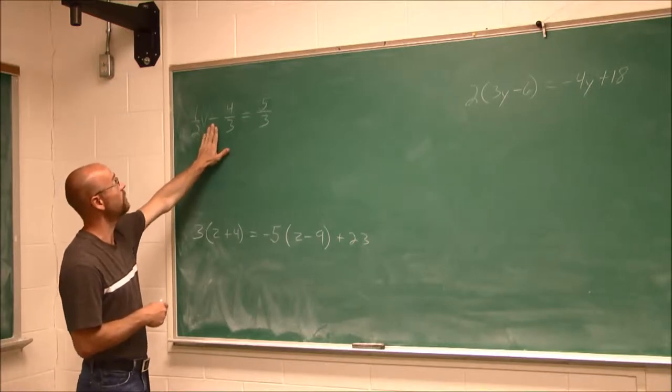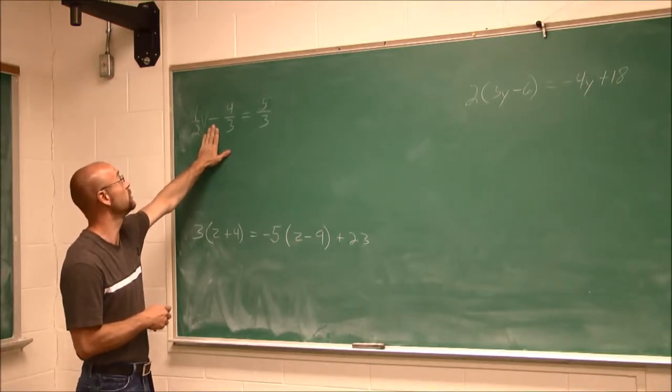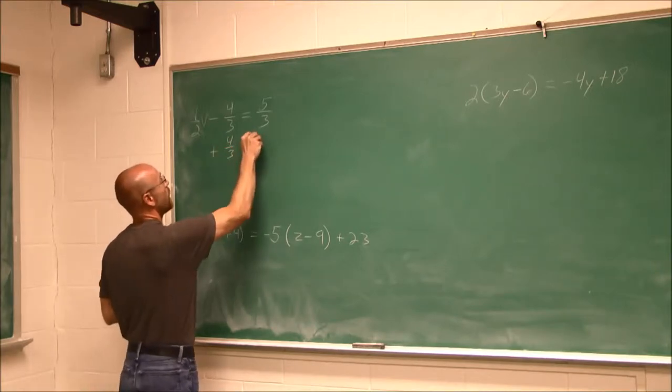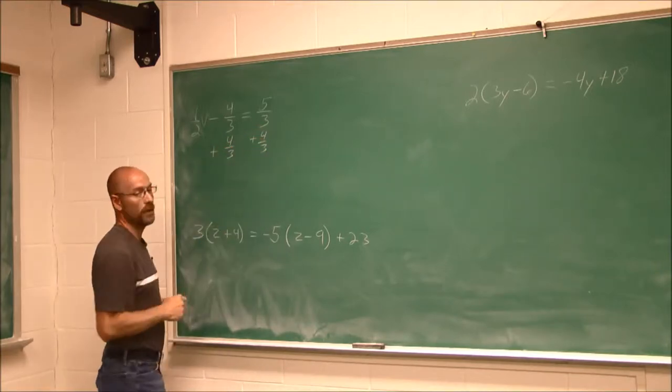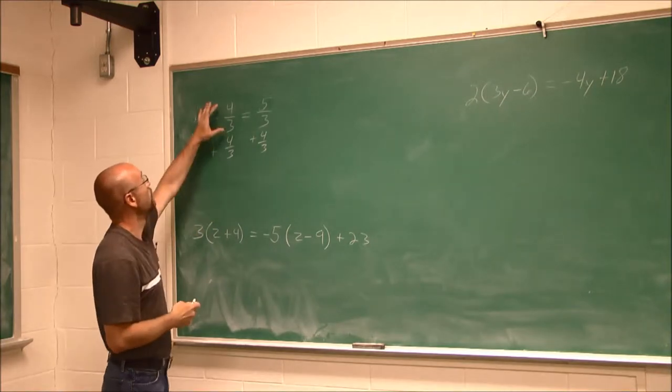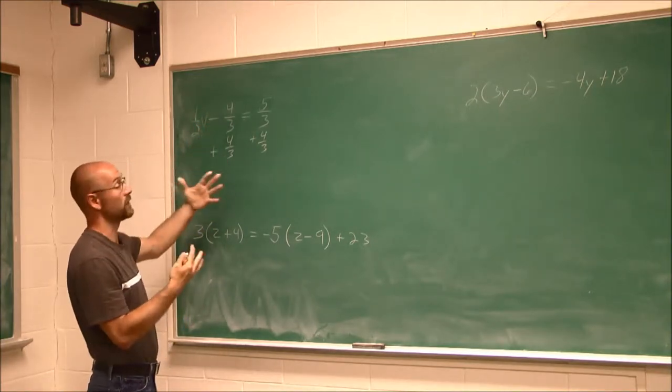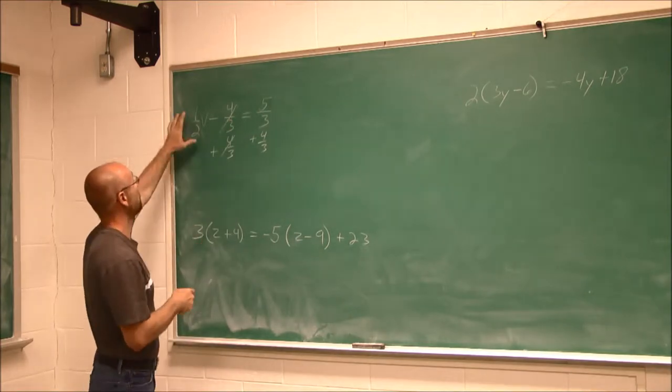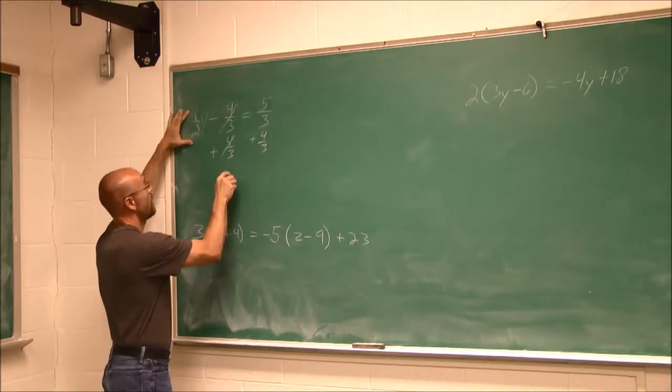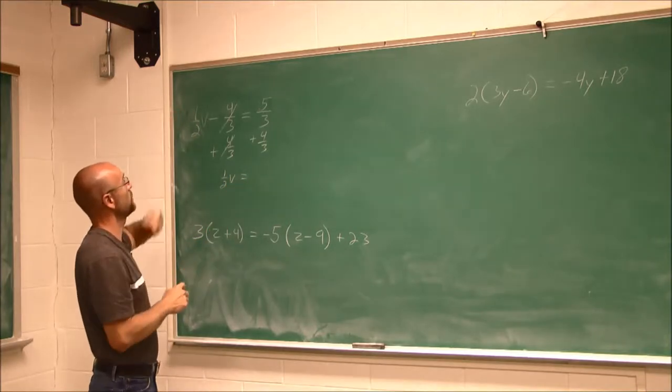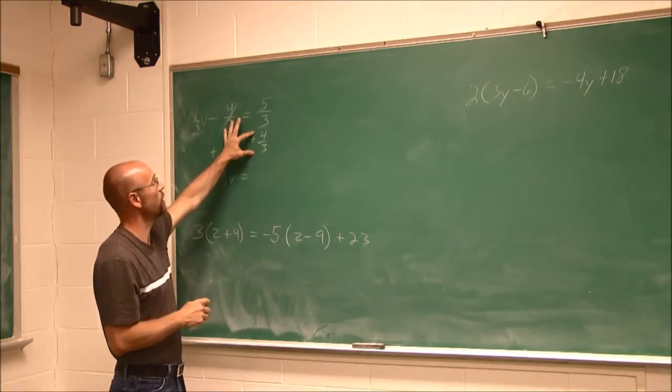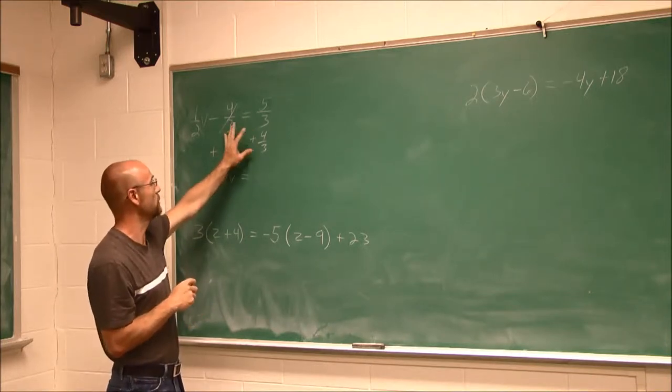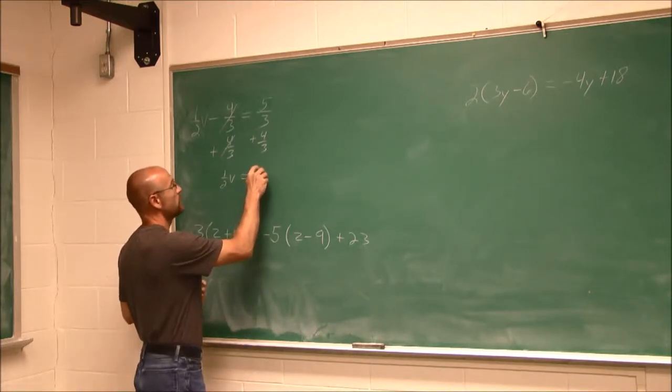So I look at this and say, well, I have subtraction. I want to undo that. So I'm going to undo it with addition. What I do to one side, I do to the other. Now, negative 4 thirds and positive 4 thirds would be 0 thirds. 0 thirds is 0. So I'm just left with this 1 half v on the left side of the equation. 5 thirds plus 4 thirds is 9 thirds. Well, I can reduce 9 thirds. 9 over 3 is 3.